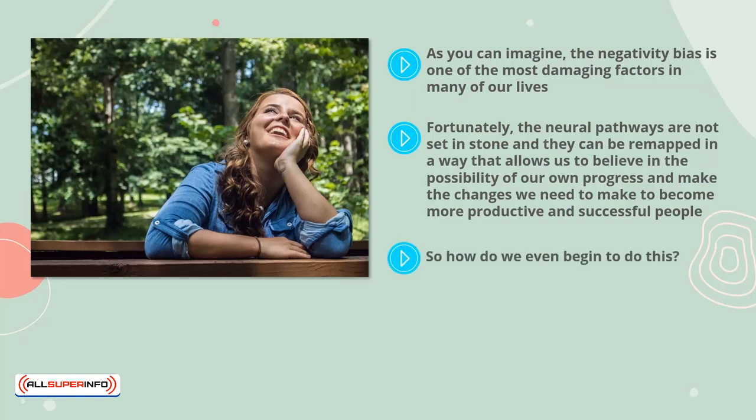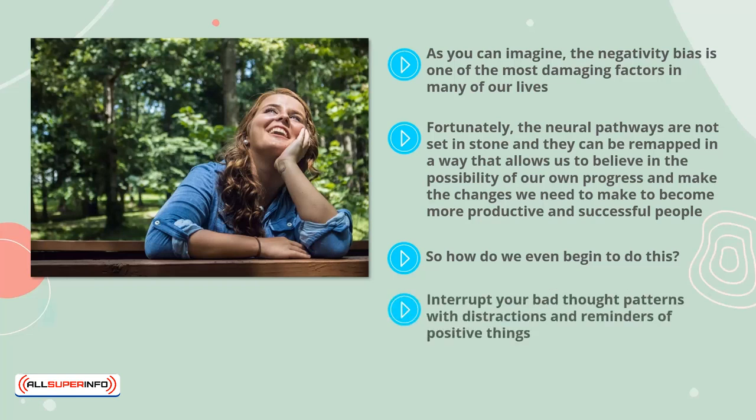So how do we even begin to do this? The first step is to practice mindfulness. Become aware of your destructive patterns and the thoughts that interrupt your ability to focus on the good in your life. Interrupt your bad thought patterns with distractions and reminders of positive things. One of the ways you can do this effectively is to write gratitude journals. You can also try mindfulness meditations, uplifting conversations with your support network, and looking at pictures of things that make you smile.